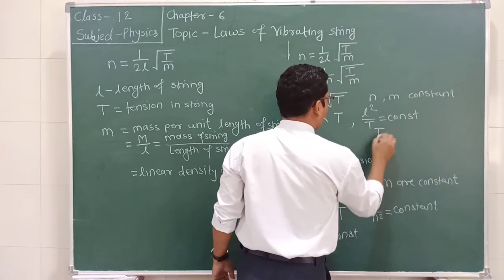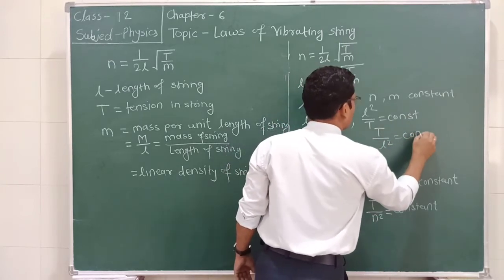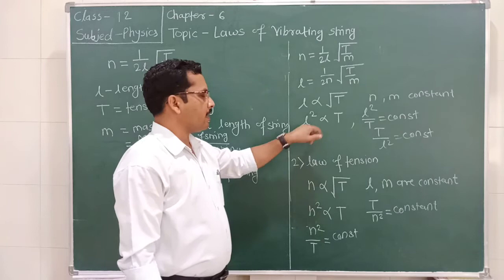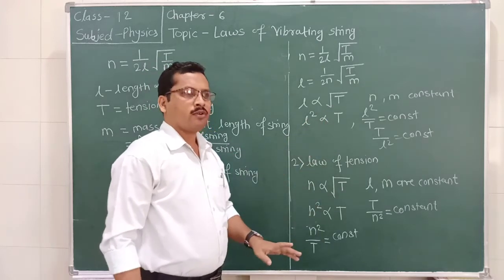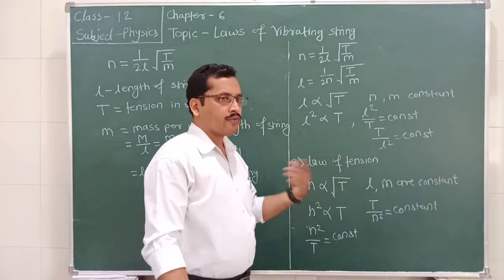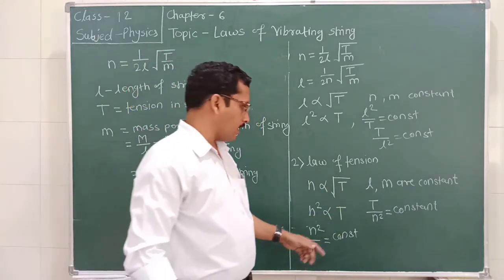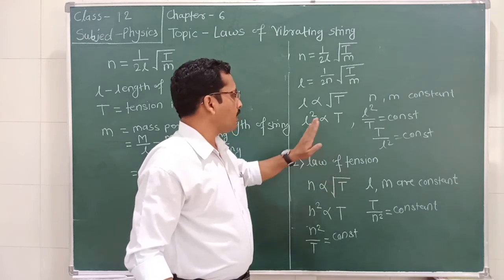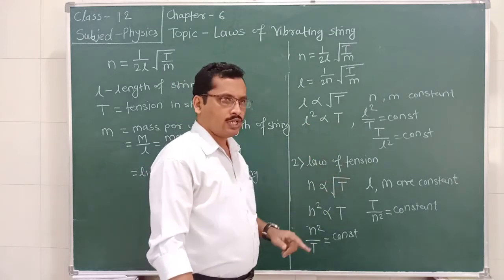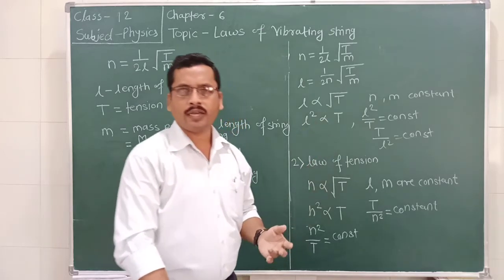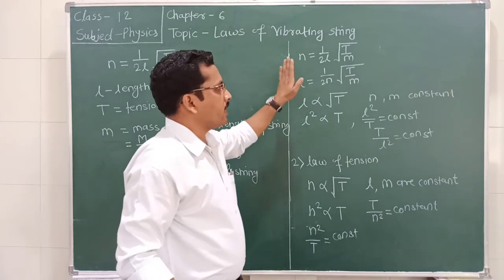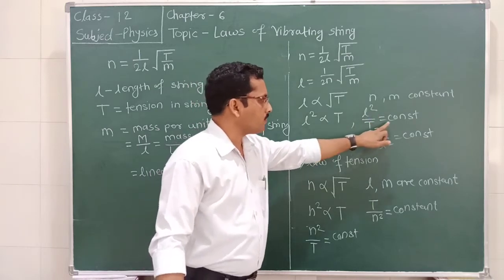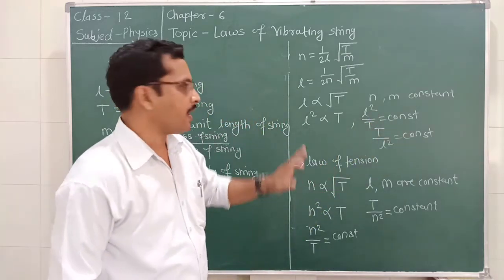Therefore n divided by square root of T is equal to constant, which is the second law. To verify the second law practically, when length changes and tension changes, we check that L squared by T is equal to constant, or n divided by square root of T is equal to constant.